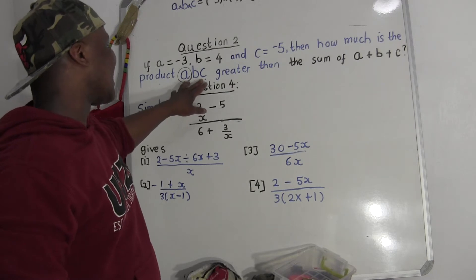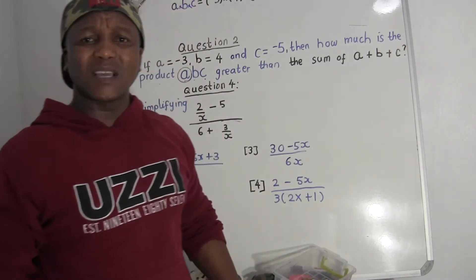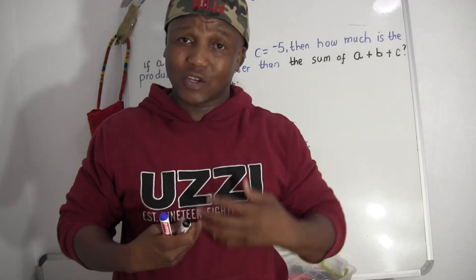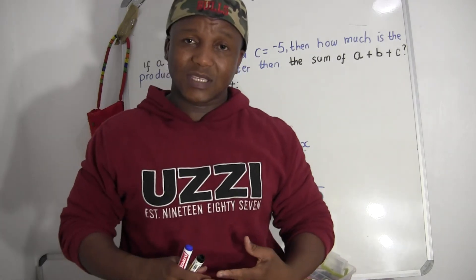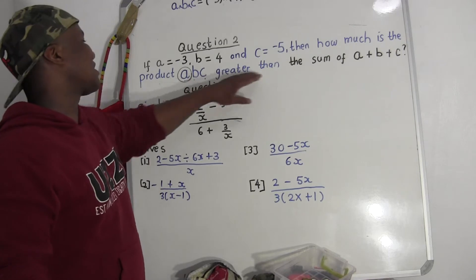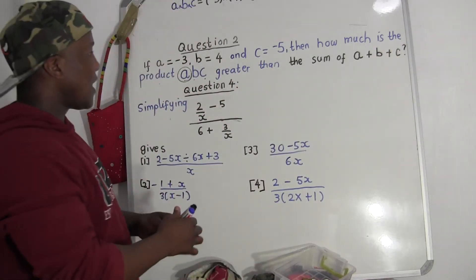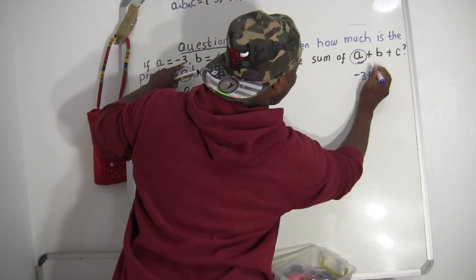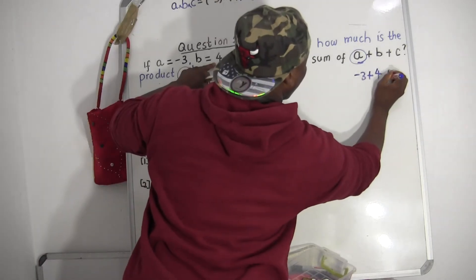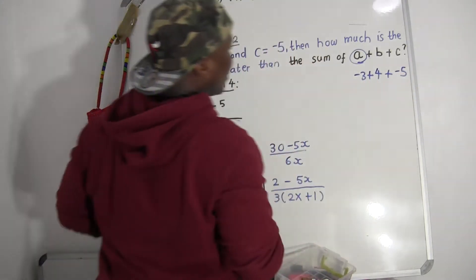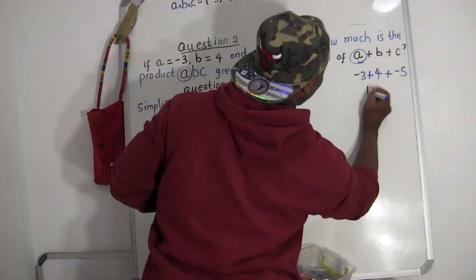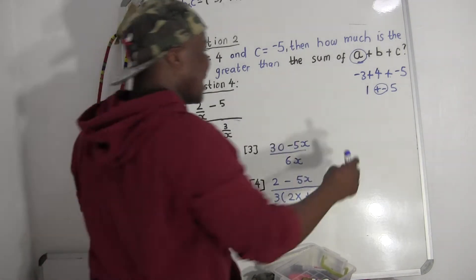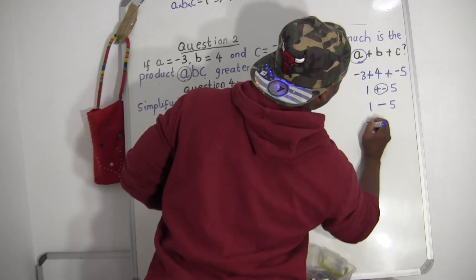We can't know how much greater one value is than another if we don't know the other value — just like if someone says how much older am I than you, I need to know your age. So I need to find A plus B plus C. A equals negative three, B equals four, C equals negative five. Negative three plus four equals positive one, and one plus negative five — since the signs are different, it gives minus. One minus five equals negative four.